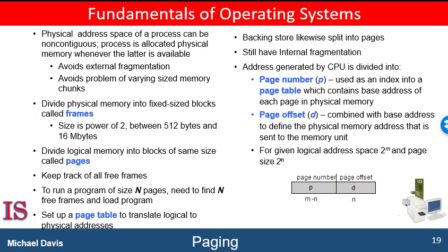While we've acknowledged that external fragmentation is eliminated with paging, we also need to realize that there will be some amount of unused memory. Remember, this scheme divides physical memory into fixed-size frames. It's highly unlikely that a job will have exactly enough instructions to exactly fill some number of frames. So, considering that the pages and the frames are the same fixed size, the last page or frame will not be completely filled with instructions. There will be some unused space in that last page or frame. That unused space is referred to as internal fragmentation.